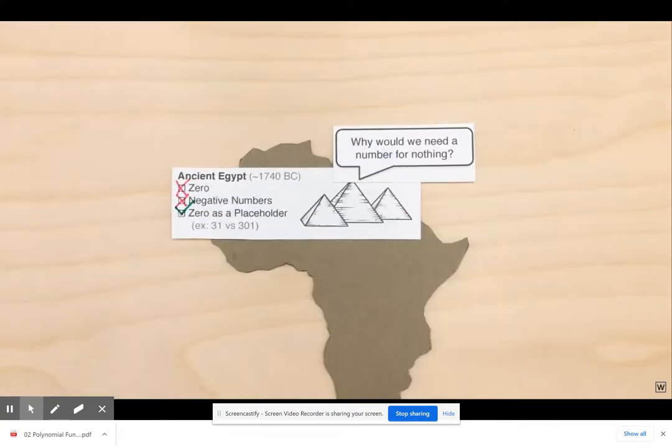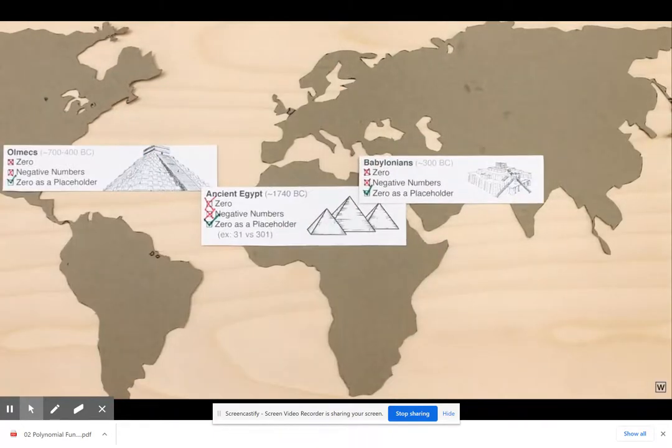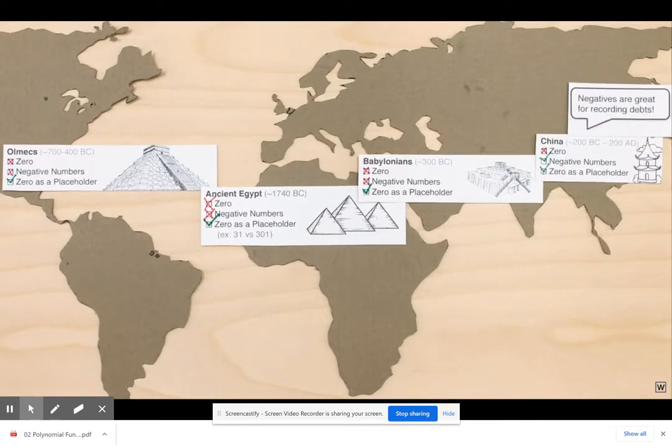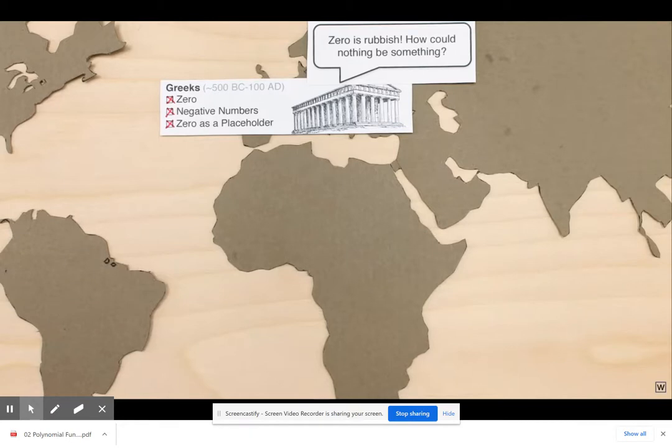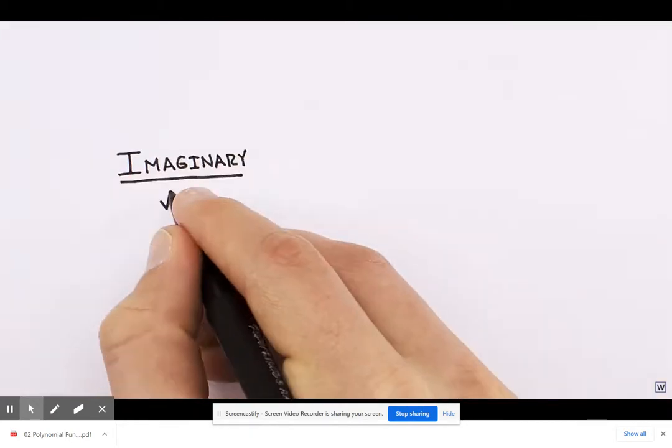Just like our friends zero and negative numbers before, the square root of negative one was generally regarded with suspicion because it didn't correspond to anything people could think of in the real world. For this reason, the square root of minus one was given the terrible names imaginary or impossible.